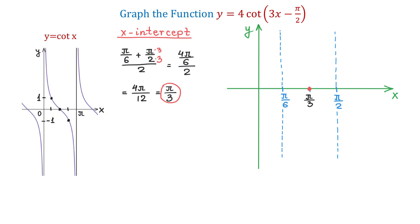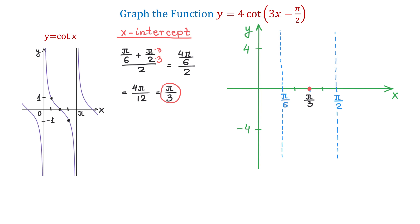Let's take another look at the basic cotangent function. At the x-intercept, if we move halfway to the right toward the vertical asymptote, the value of the function is negative 1. If we move halfway to the left, the value is positive 1. In our function, we have the number 4 in front of the cotangent. Because of this, when we move halfway to the right from the x-intercept, the value will be negative 4, and when we move halfway to the left, the value will be positive 4. Now let's find the x-coordinates of these points for a more accurate graph.